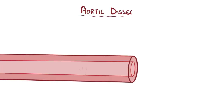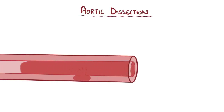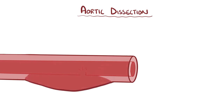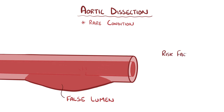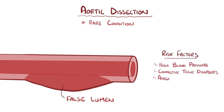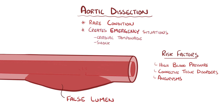As a quick recap: an aortic dissection is where blood tunnels between the tunica intima and tunica media, separating the two layers and creating a false lumen. This is a rare condition that most often happens with a history of high blood pressure, connective tissue disorders, and aneurysms. An aortic dissection can lead to emergency situations like cardiac tamponade and shock, and should be treated immediately.